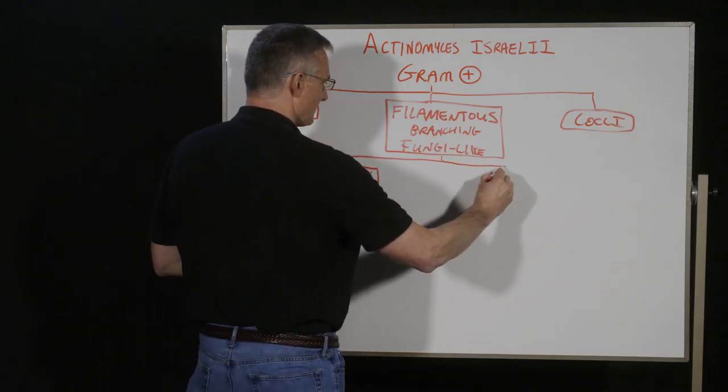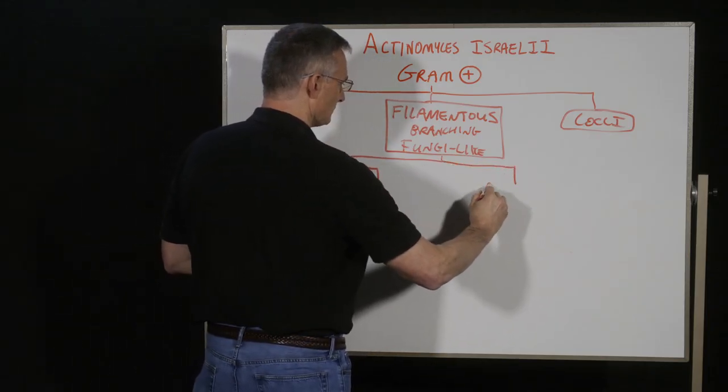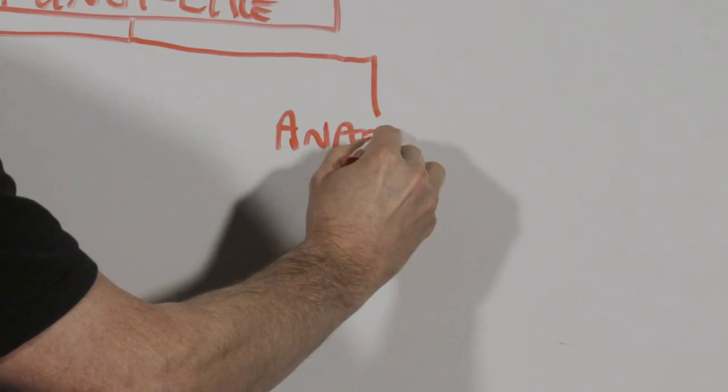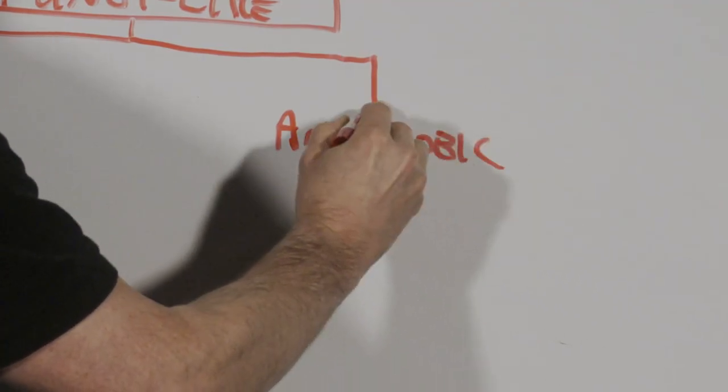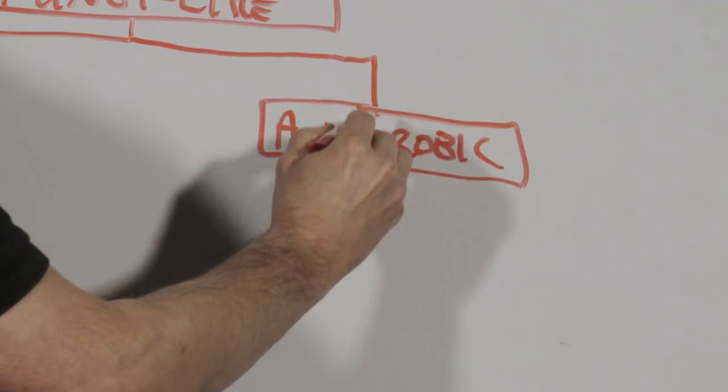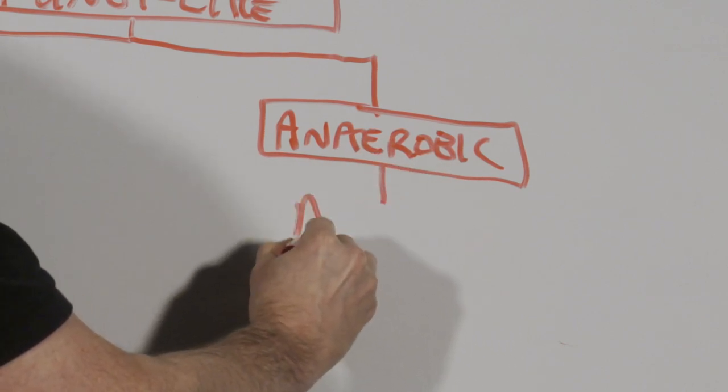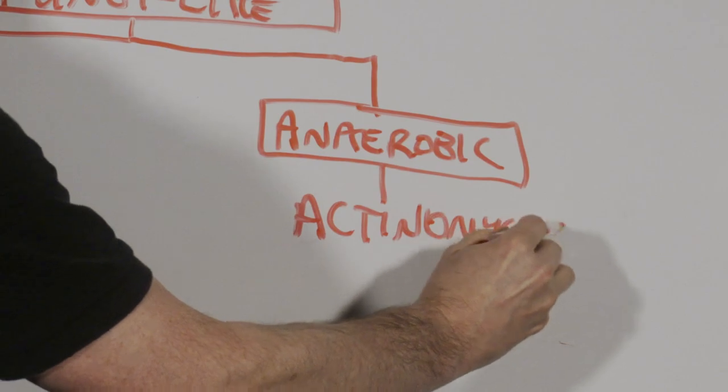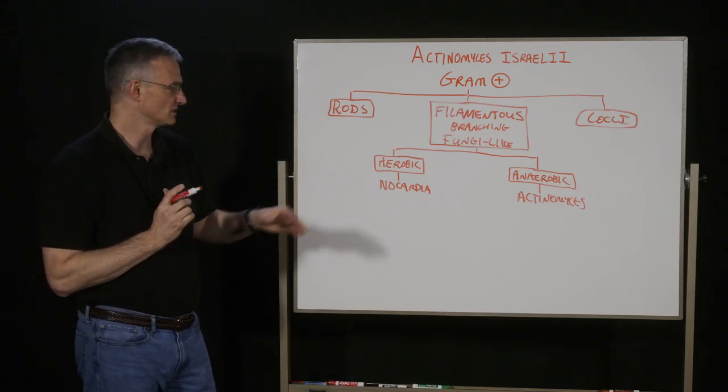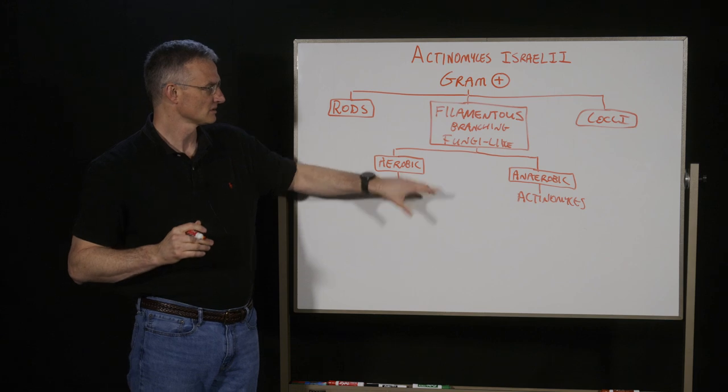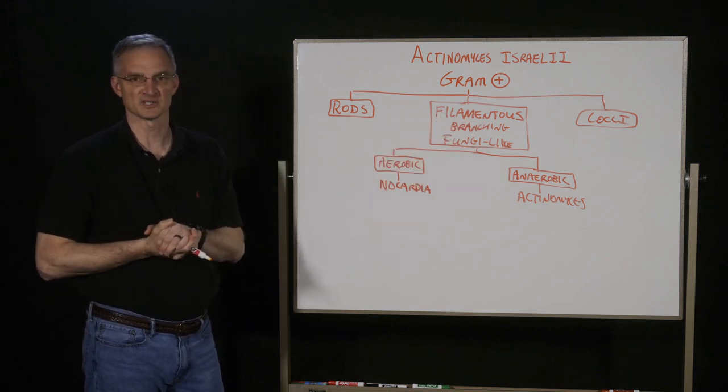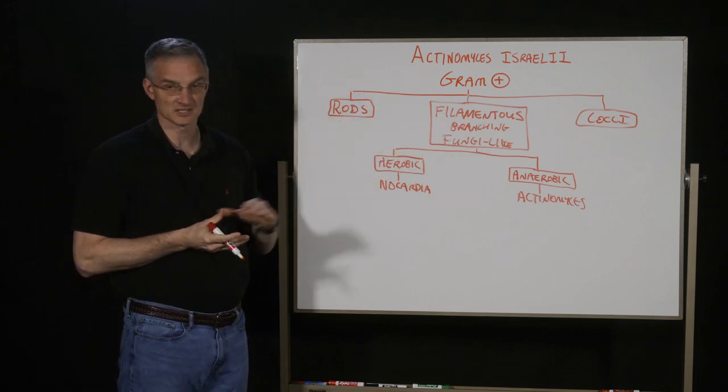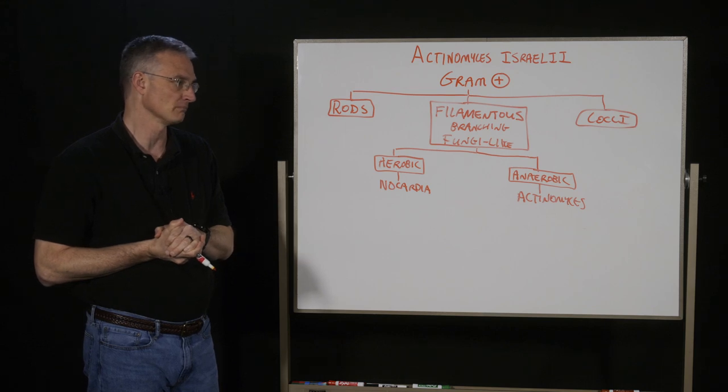And the opposite of that is going to be what we're dealing with today, which is the anaerobic filamentous bug, which of course is our actinomyces. So by those differentiators, you can tell these are the two main filamentous branching gram positives they can ask you about on boards.